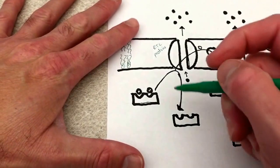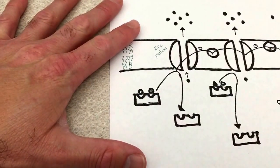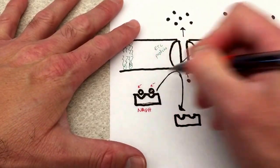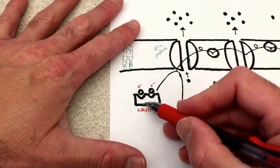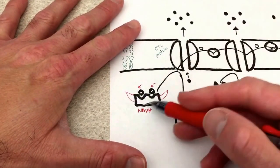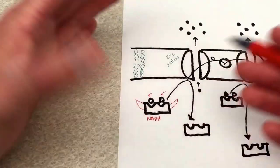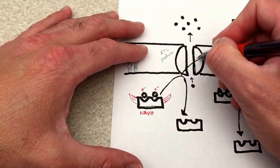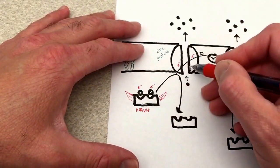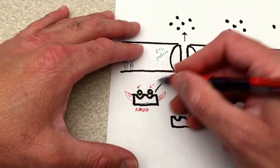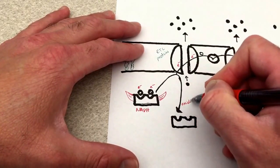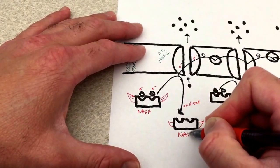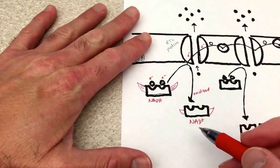We have some familiar-looking molecules here. This little Lego piece with the electrons on it is our NADH — the reduced form because it has the electrons loaded onto it. NADH is going to fly in from the citric acid cycle or from the cytosol via glycolysis, and it's going to drop off its electrons at this first protein of the electron transport chain. When it does so, it is oxidized — it loses its electrons — and it's oxidized to NAD+.